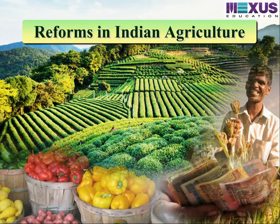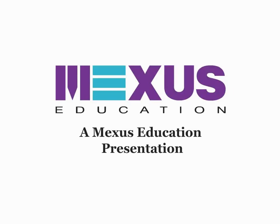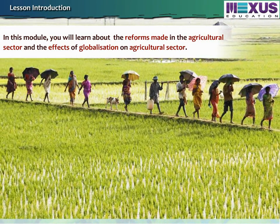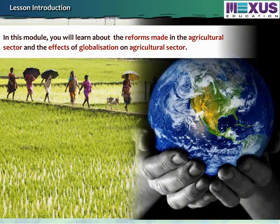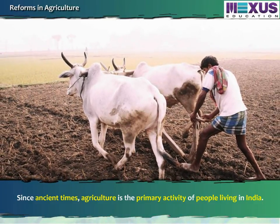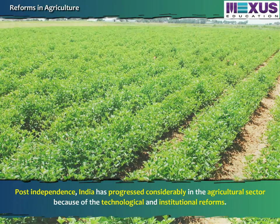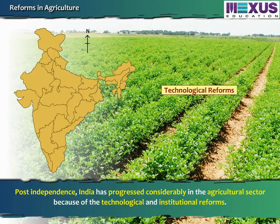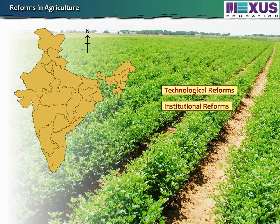Reforms in Indian Agriculture. In this module, you will learn about the reforms made in the agricultural sector and the effects of globalization on the agricultural sector. Since ancient times, agriculture is the primary activity of people living in India. Post-independence, India has progressed considerably in the agricultural sector because of technological and institutional reforms.